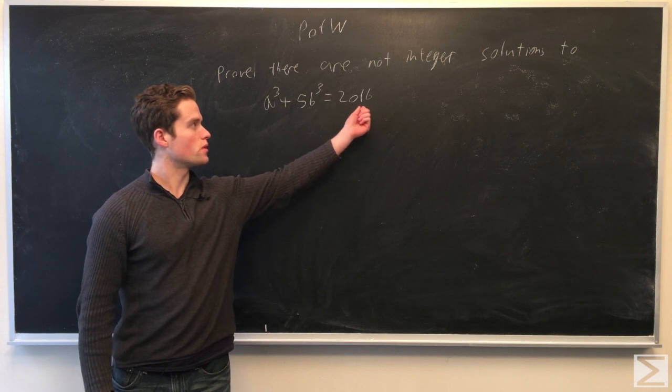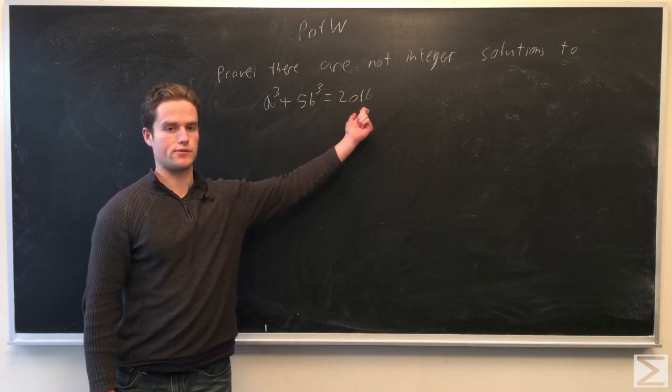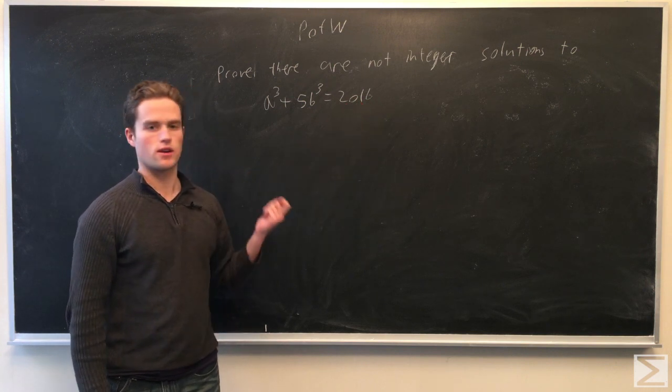First note 2 + 1 + 6 = 9, so the right side is divisible by 9. This suggests we take everything modulo 9.